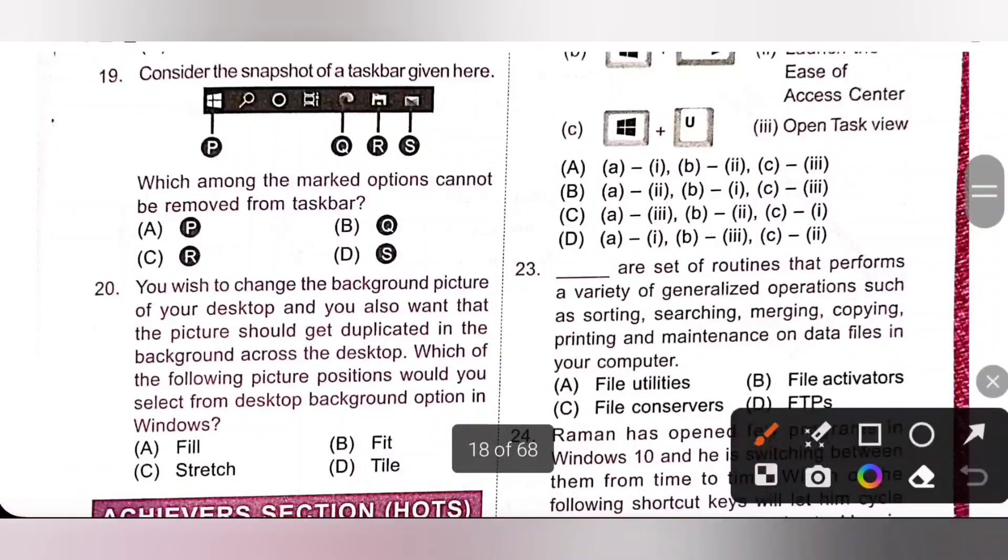Nineteenth. Consider the snapshot of a taskbar given here. Which among the marked options cannot be removed from the taskbar? Please check the given snapshot. So, P, which is a start button, it cannot be removed by the user. Option A is the correct answer.